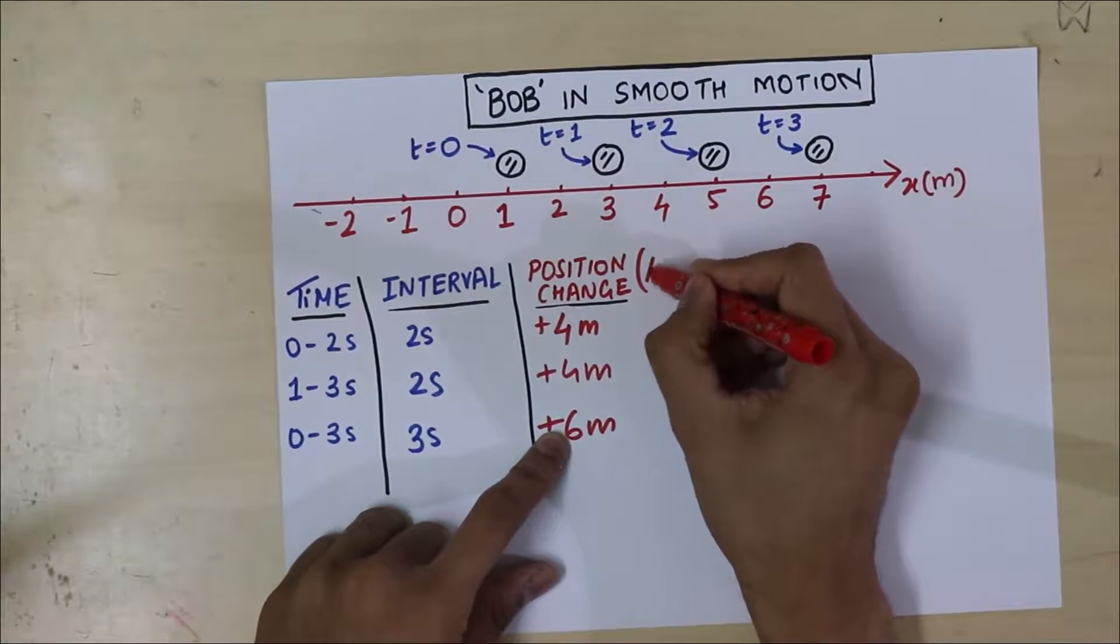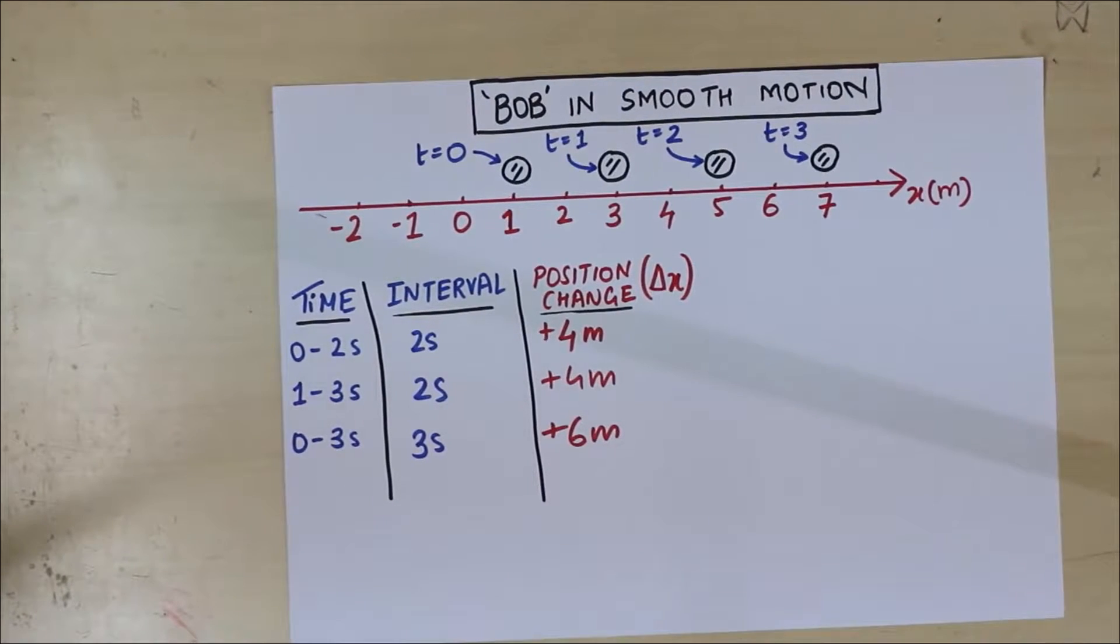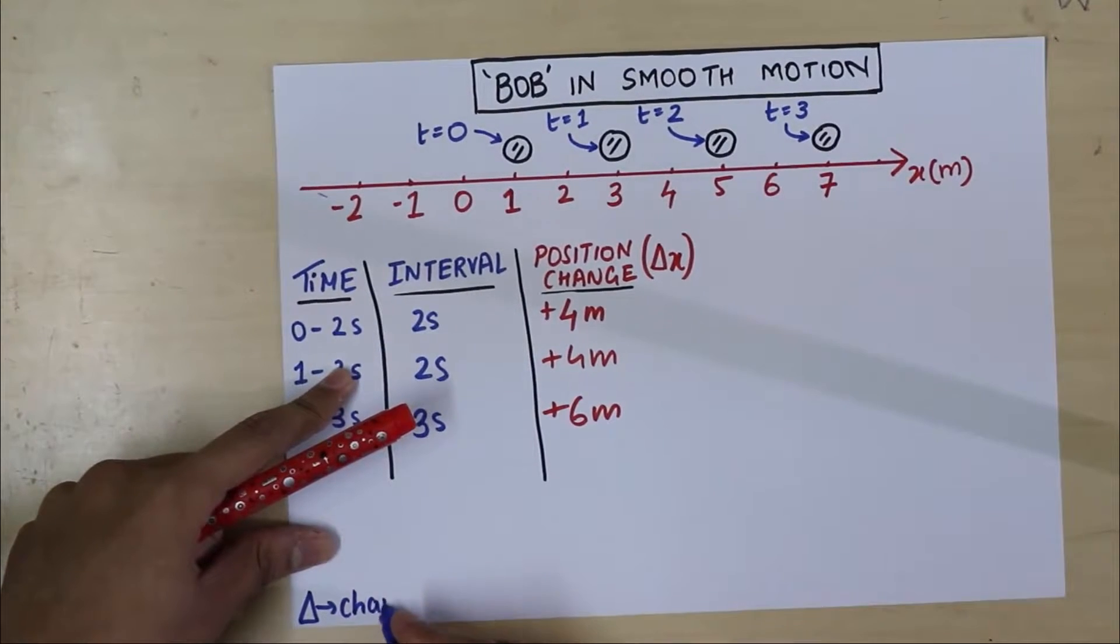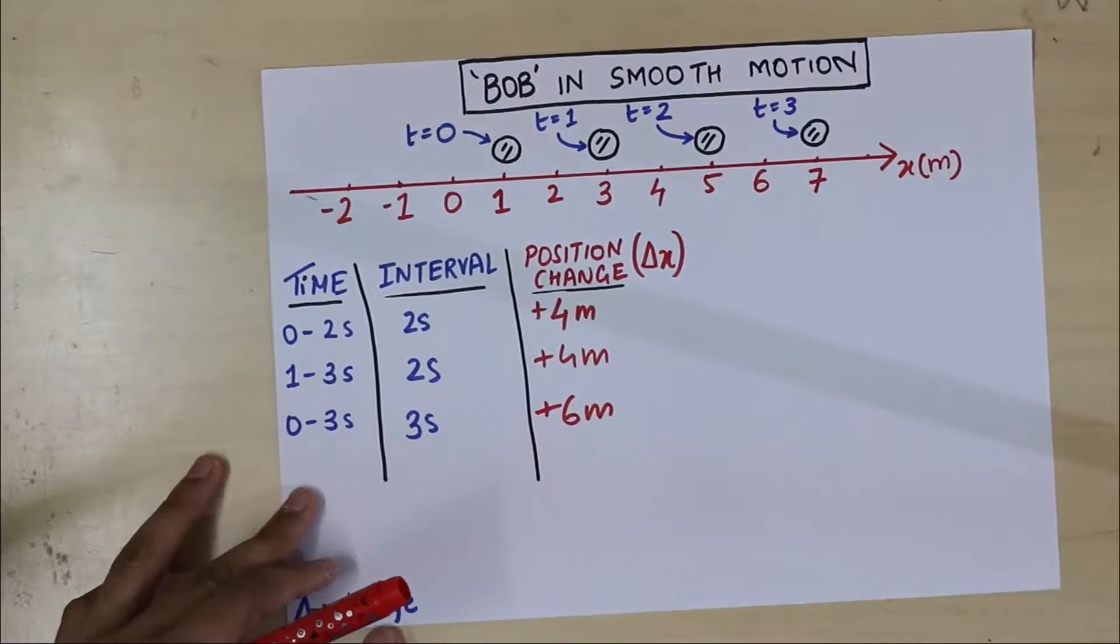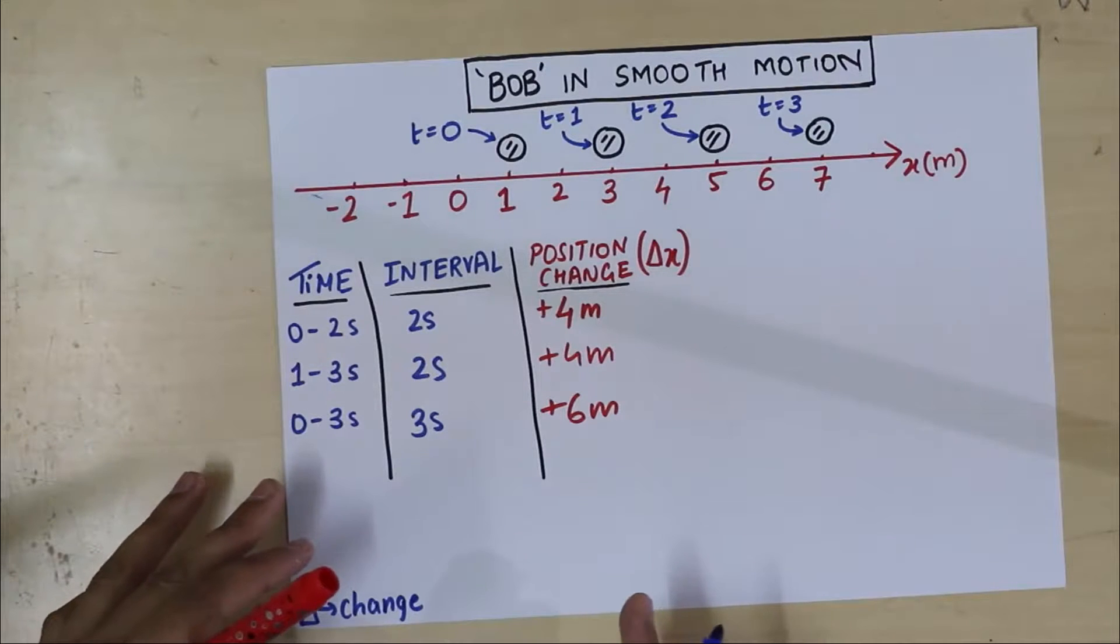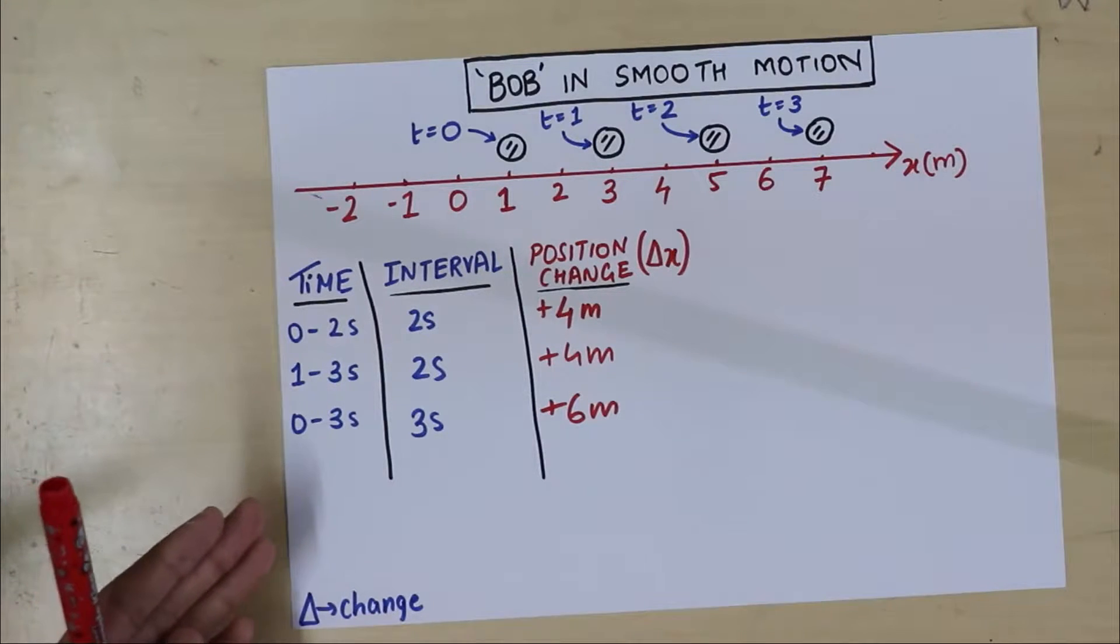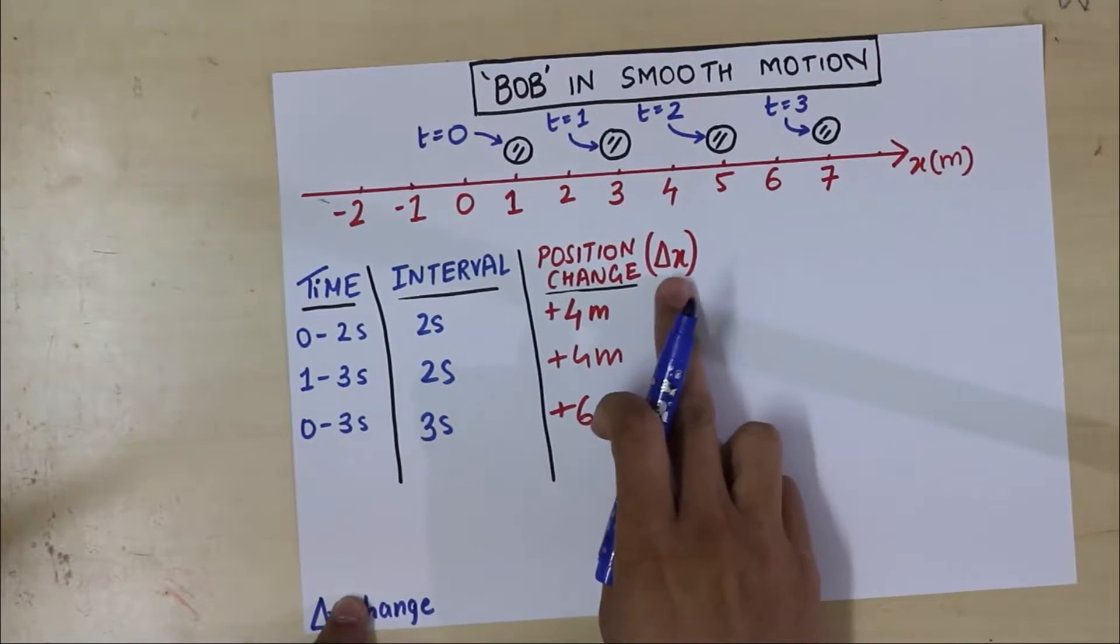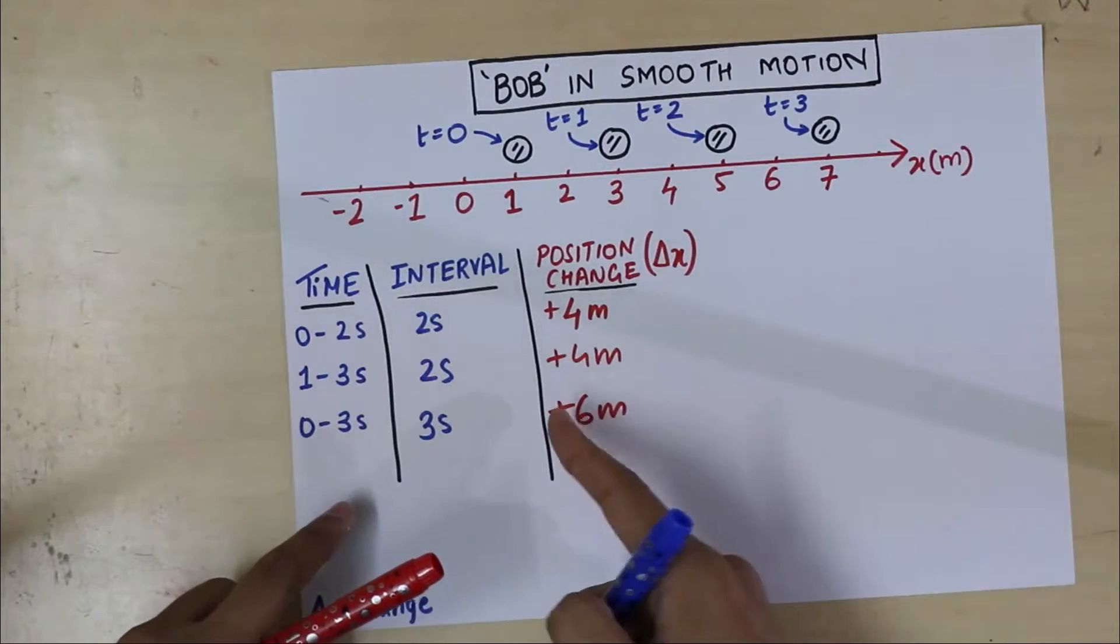See, we're going to represent position change by the symbol delta x. Delta stands for change. I'm going to write that here somewhere. Delta is change. And in physics, whenever you hear the word change, it is always calculated as the final value minus the initial value. It could be change in momentum. Final momentum minus initial momentum. It could be change in volume. Final volume minus initial volume. Right now, it's the change in position. Delta x.